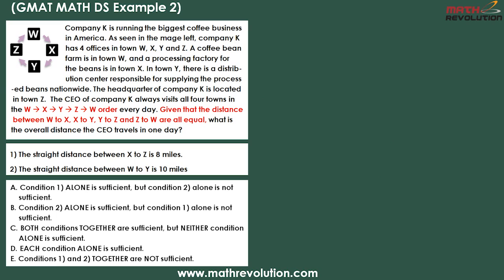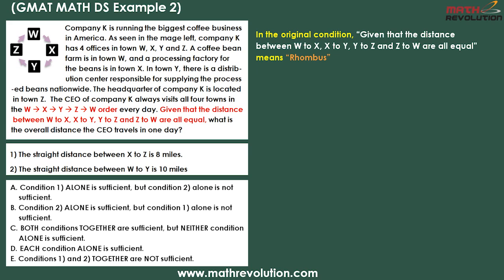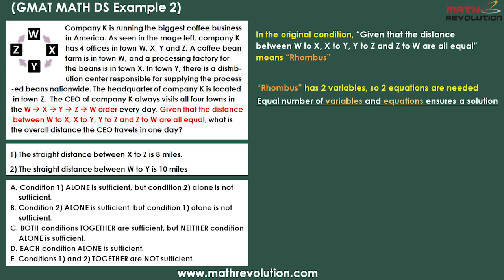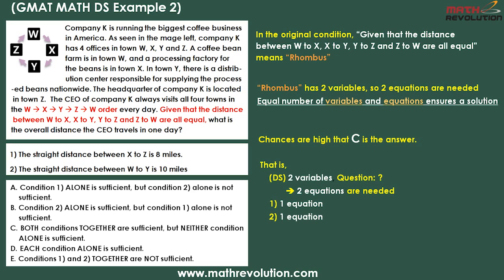According to the variable approach, saying that four sides are equal is the same as saying that we have a rhombus. And since a rhombus has two variables, we need two equations to solve this problem. In the DS section, equal number of variables and equations ensures a solution. C is likely our answer because both statements taken together are sufficient to answer the question, but neither statement alone is sufficient. In other words, condition 1 gives us an equation, and condition 2 gives us another equation, for a total of two equations that will allow us to solve for the two variables.